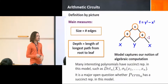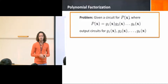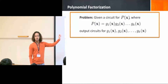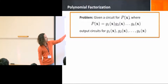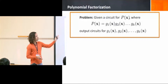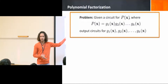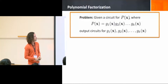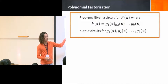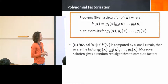Many interesting polynomials have succinct representation in this model, even in constant depth, such as the determinant and the symmetric functions. It's a major open question whether the permanent has a succinct representation in this model, but we won't talk about it here. We're just interested in the factor. The polynomial factorization problem: given a circuit computing P(x), where P factors into a product of g1 up to gk, we want to output circuits that compute the polynomials g1 up to gk.